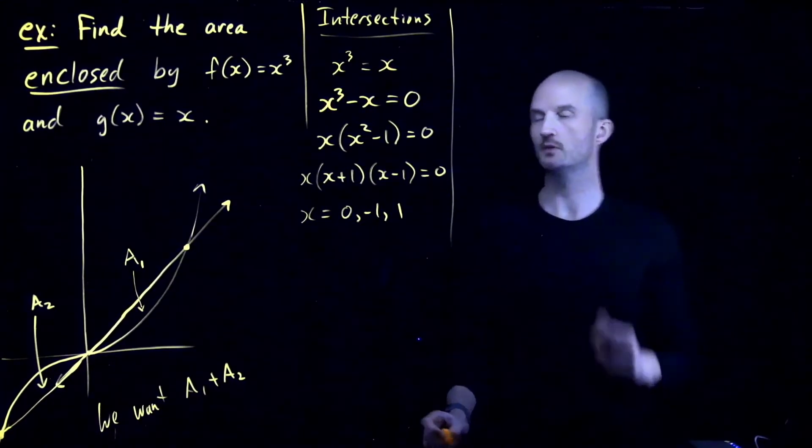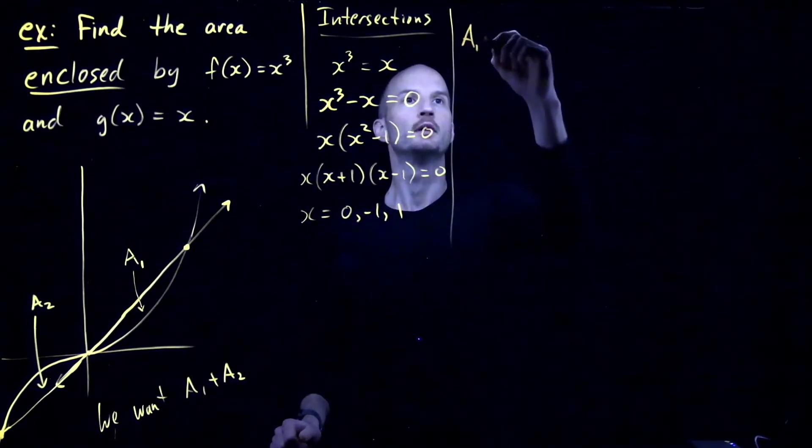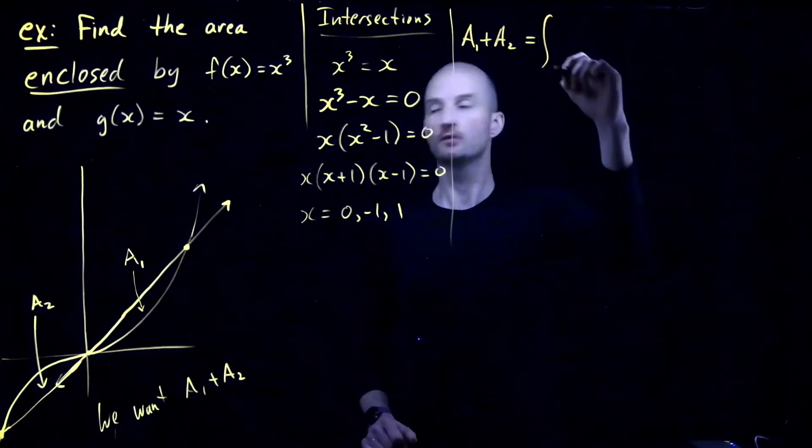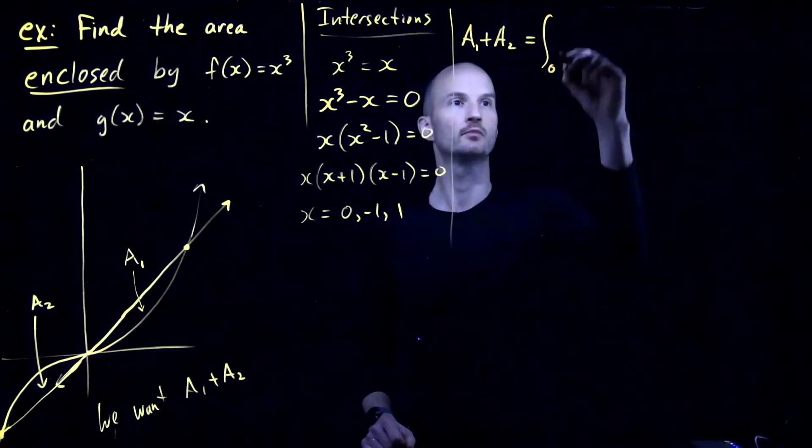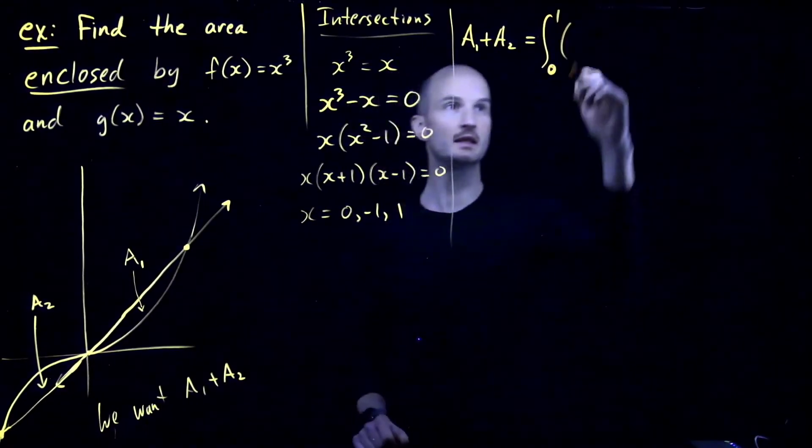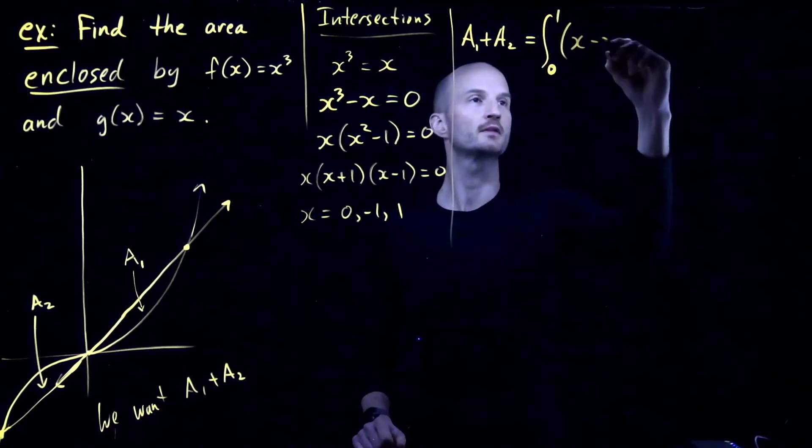Okay. Now, let's find A1 plus A2. So, A1 plus A2. A1 is this guy. So, that's the integral from 0 to 1 of the upper function, which is the x minus the cubic dx.